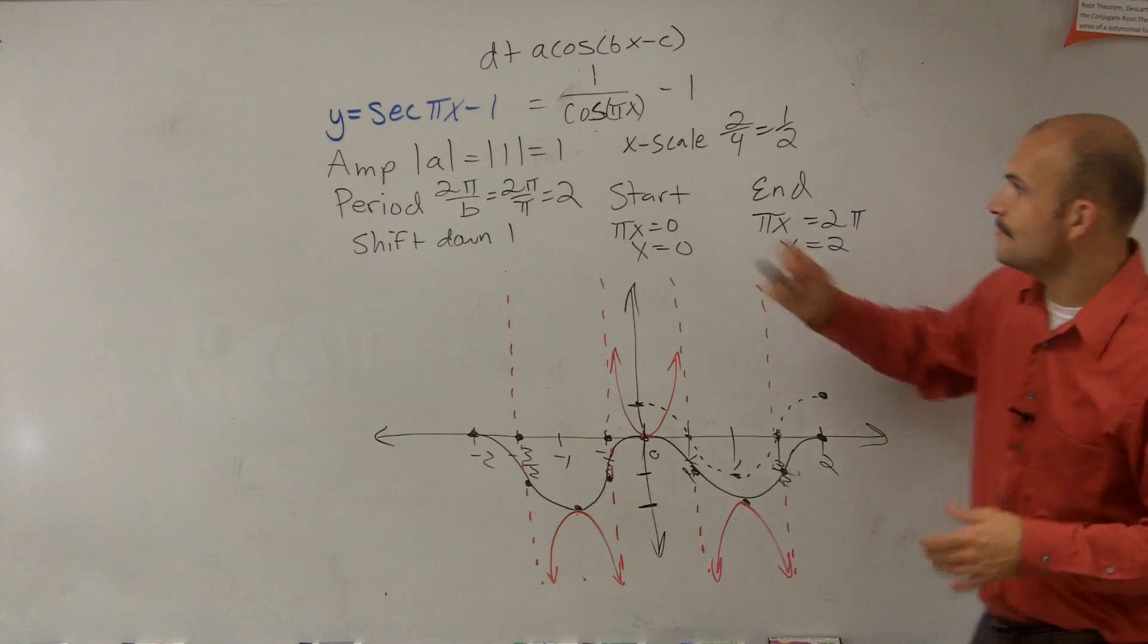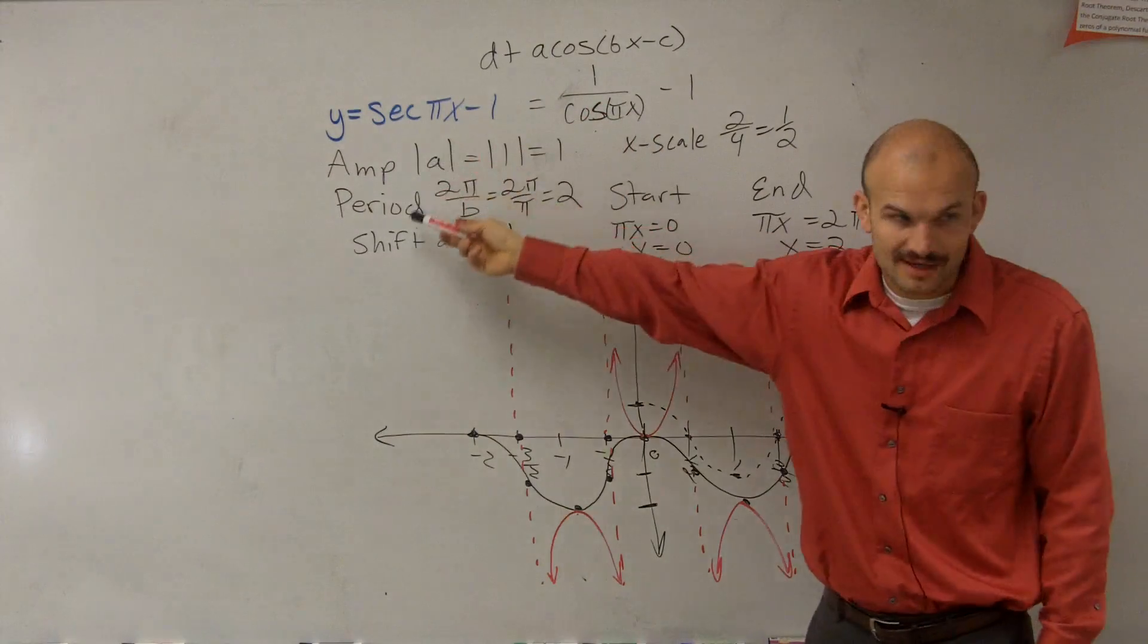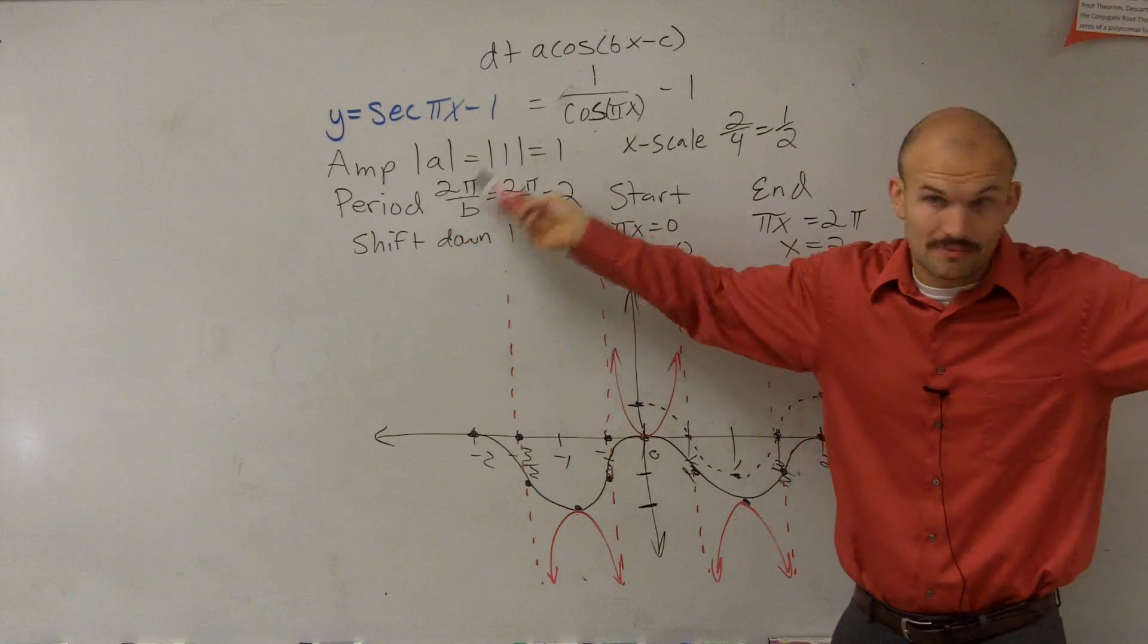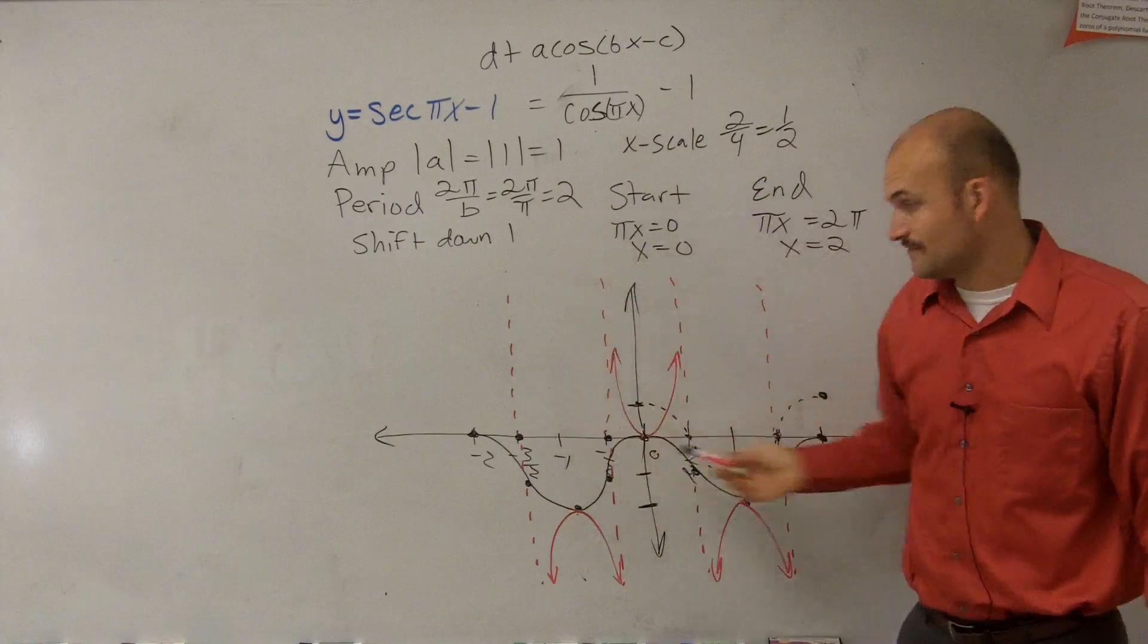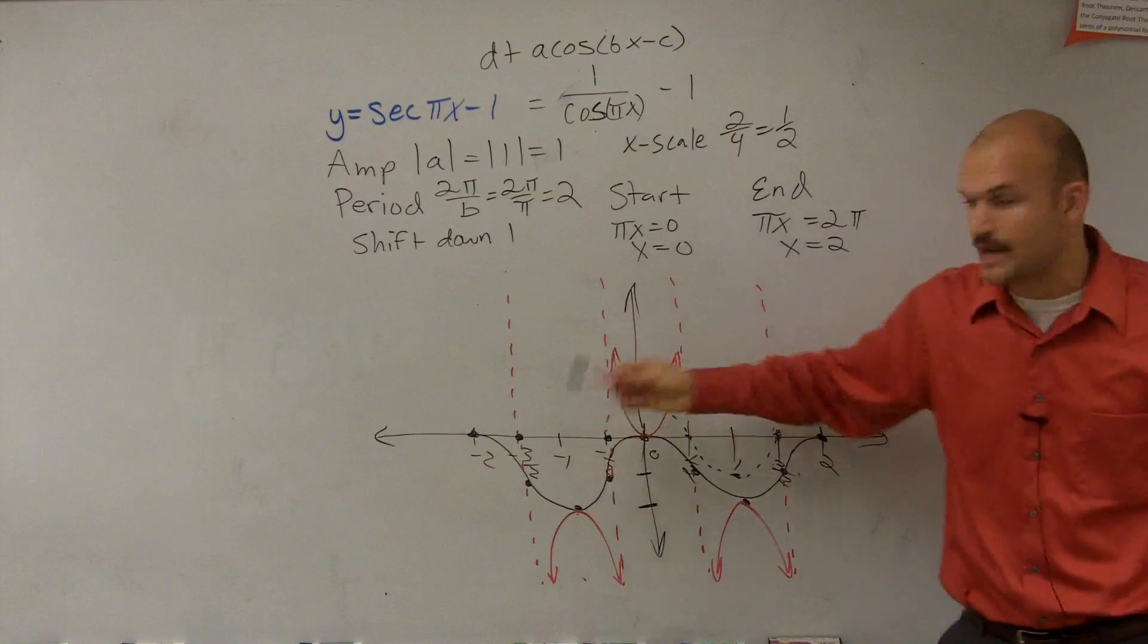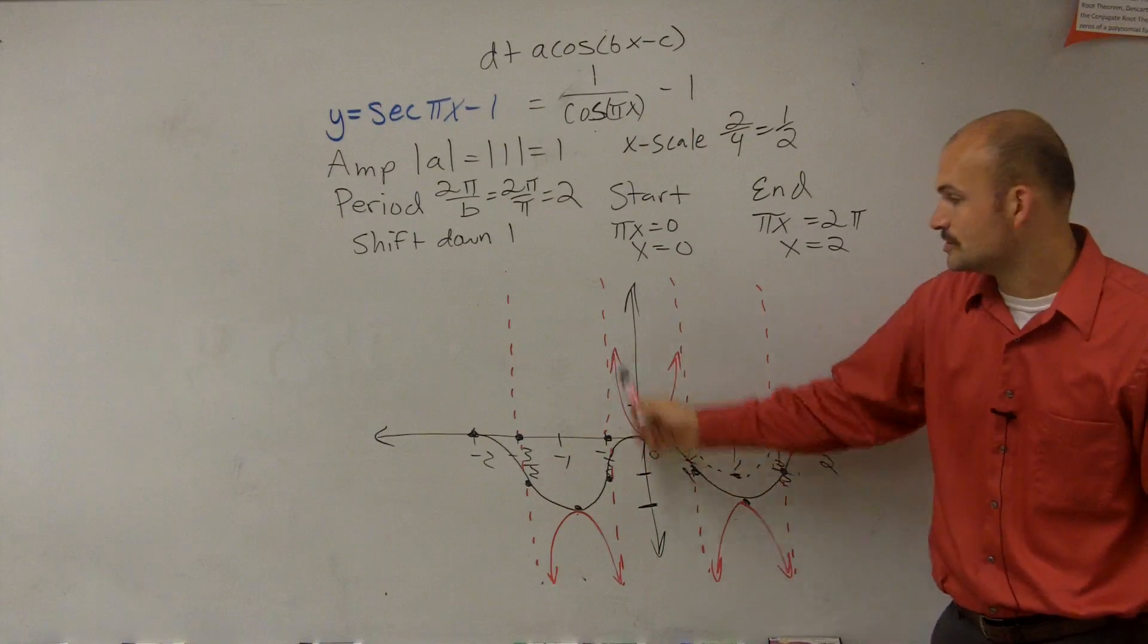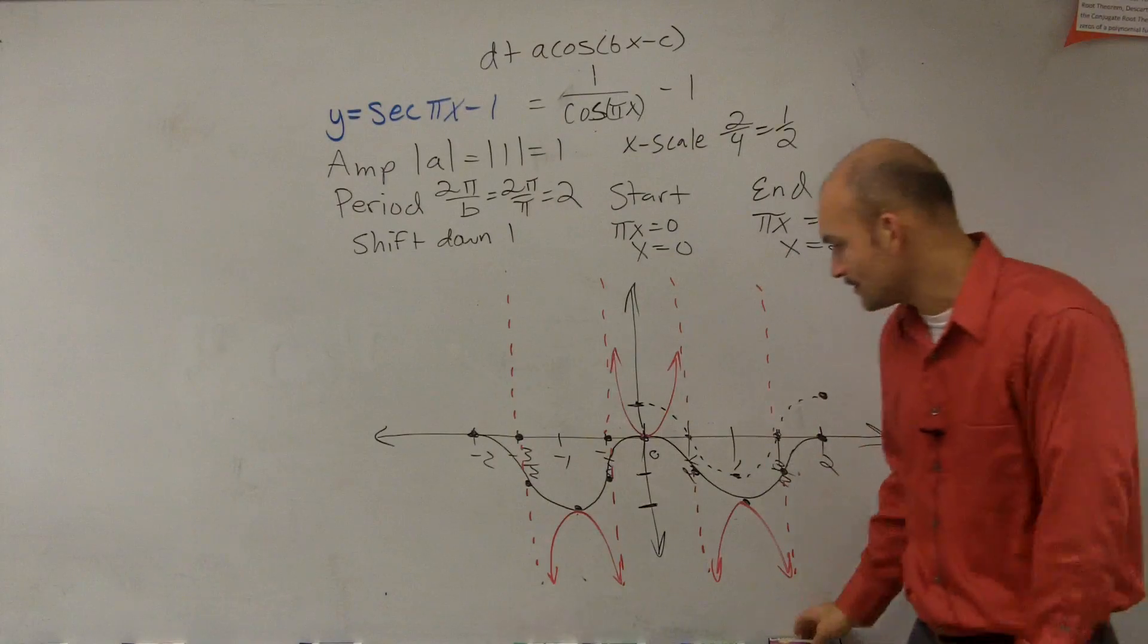Just to really recap, find the reciprocal function, graph it, like you did for all of those problems. Graph it, do whatever transformation you have to do. Then wherever there is an x-intercept, create a vertical asymptote. Then at every max min, you're going to create kind of a parabola going in the opposite direction approaching it.